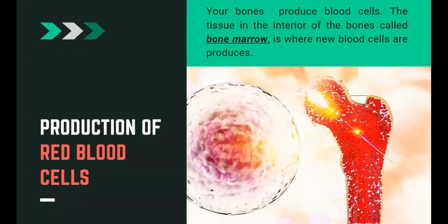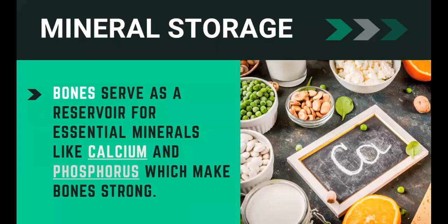Next is the production of red blood cells. Your bones produce blood cells. The tissue in the interior of bones is called the bone marrow — it's where new blood cells are produced. The musculoskeletal system also serves as mineral storage. Bones serve as the reservoir for essential minerals like calcium and phosphorus, which make bones strong.